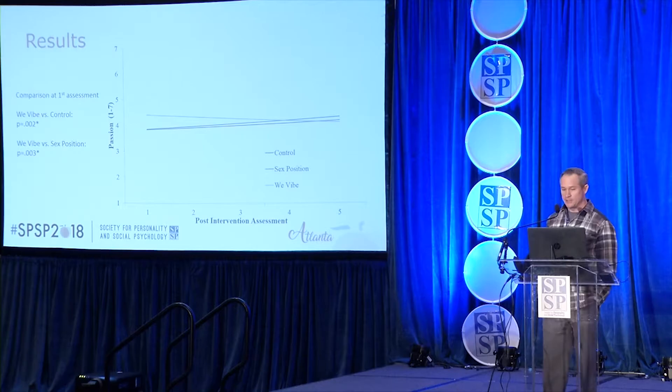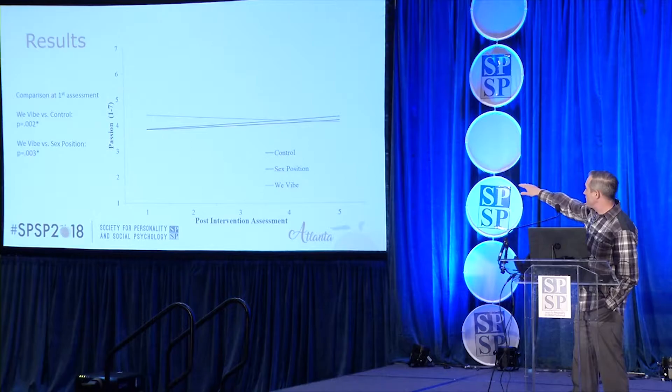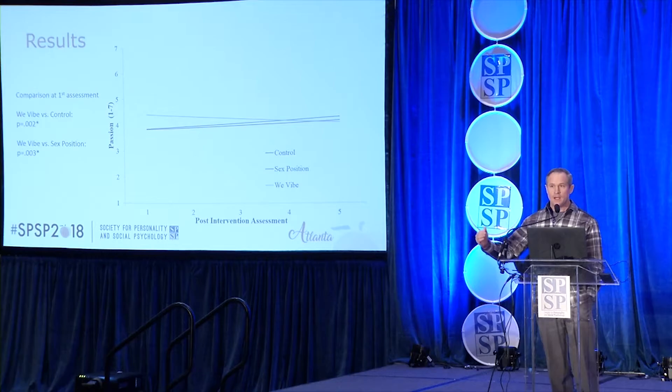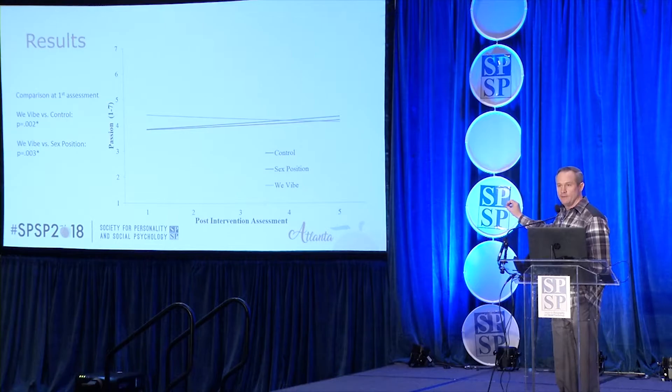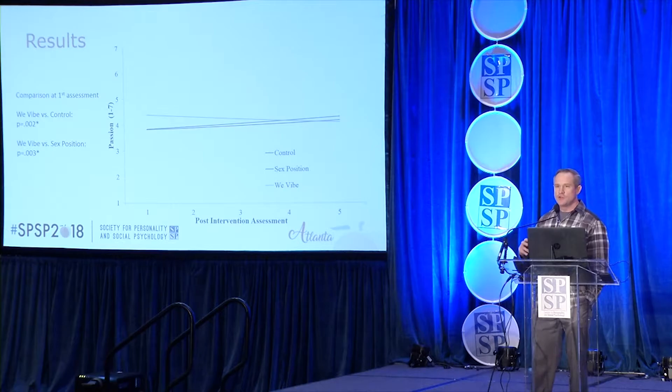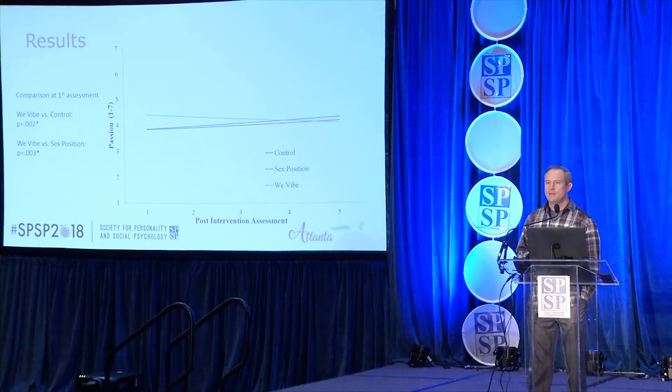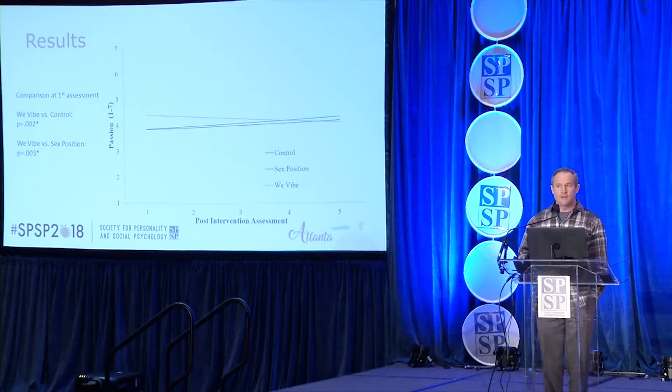Results did meet significance for passion. The WeVibe group scored higher than the other two conditions on self-reported passion, with p-values meeting significance at the first assessment and the second assessment as well—but then they start to converge again. So for about five to eight days, couples that introduced novel sexual behavior using a couple-oriented vibrator reported heightened levels of passion compared to the other two groups, controlling for pre-intervention passion levels.